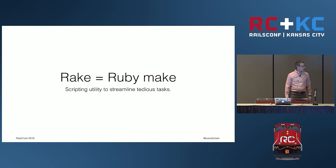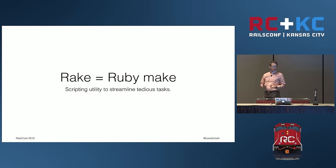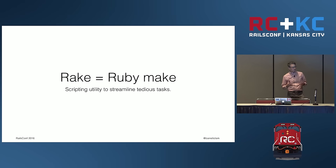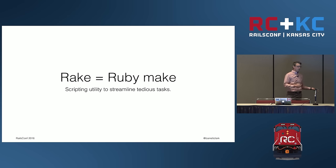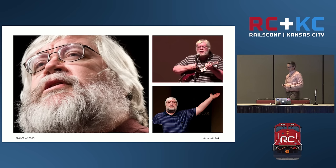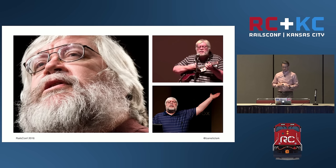Rake is a Ruby scripting utility used to streamline repetitive, tedious tasks. It can be considered a Ruby version of Make, the Unix build automation tool. Similar to Make, we have a Rake file, but the Rake file is written in Ruby. It was created by Jim Weirich, who unfortunately passed away in February of 2014. I still miss him — his spirit, his influence, his energy.